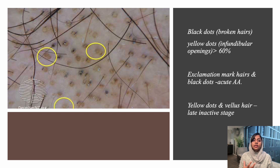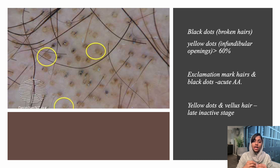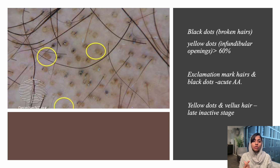You can identify whether it is an acute alopecia areata or a late inactive stage. Exclamation mark hairs and black dots are seen in acute alopecia areata. Exclamation mark hairs are hairs with a narrow proximal end and a broader distal end. When these are more prominent, it indicates acute alopecia areata. When there are more yellow dots and vellus hairs, it indicates a late inactive stage.